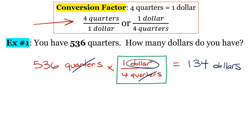I know that seems way more complicated than it needs to be, but just bear with me. This process will make sense over the next couple of lessons. The reason we write out our conversion factors as fractions is because when we're doing multiple conversions it will help us keep everything straight.